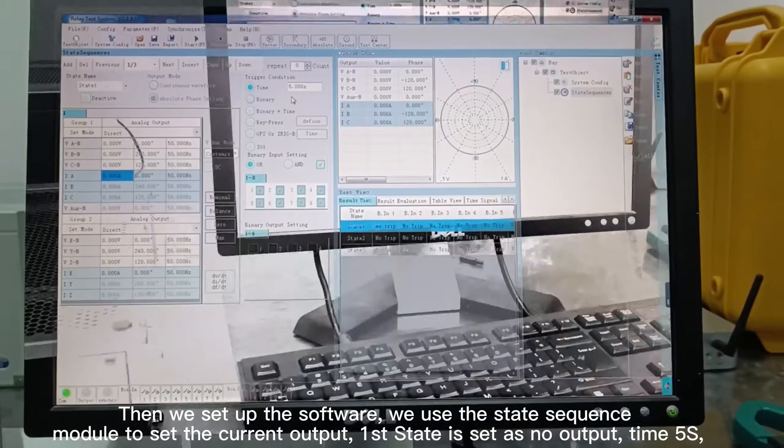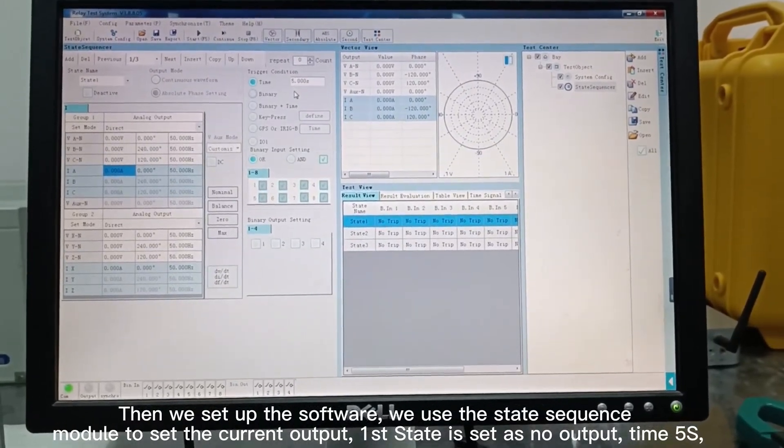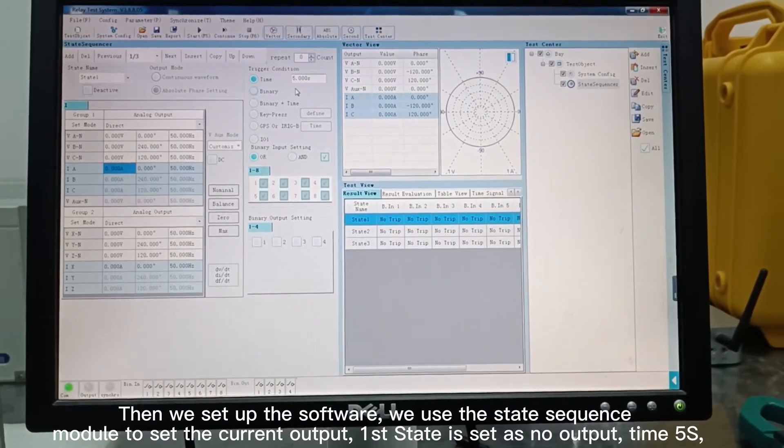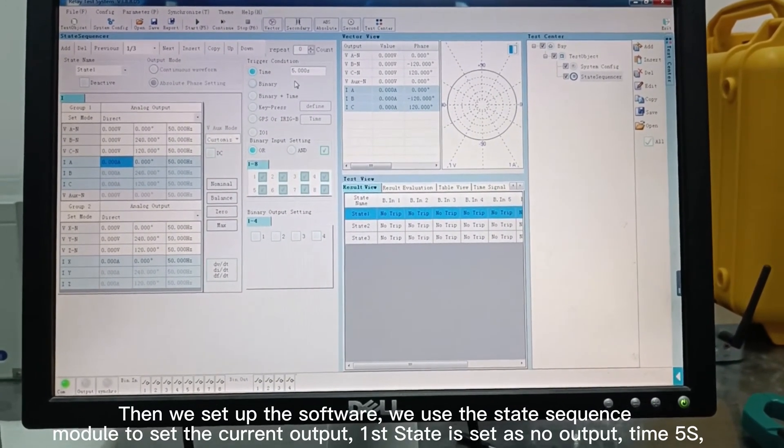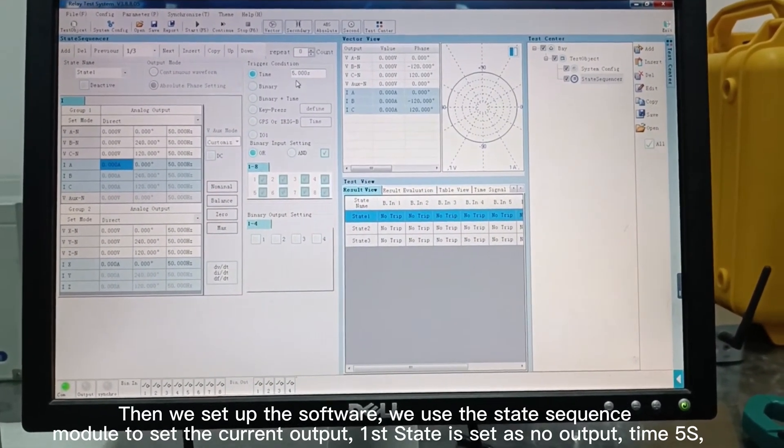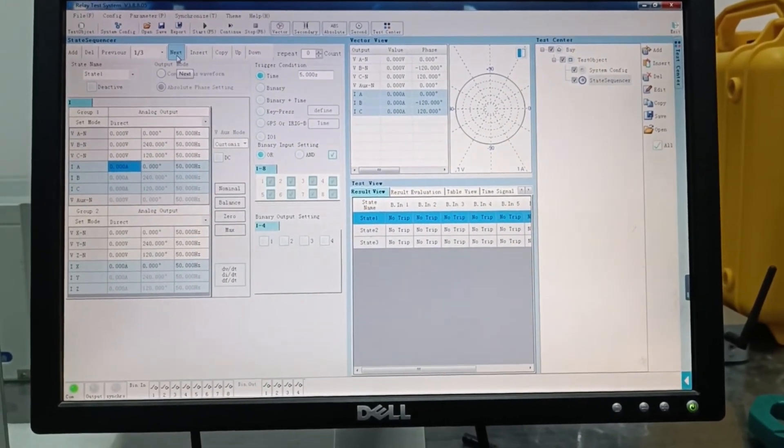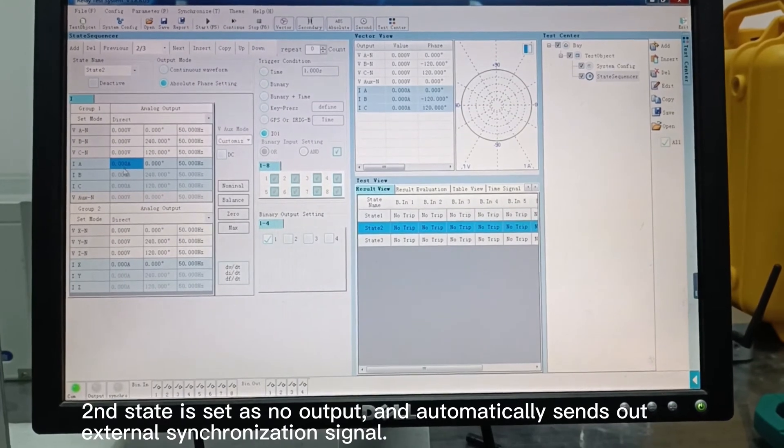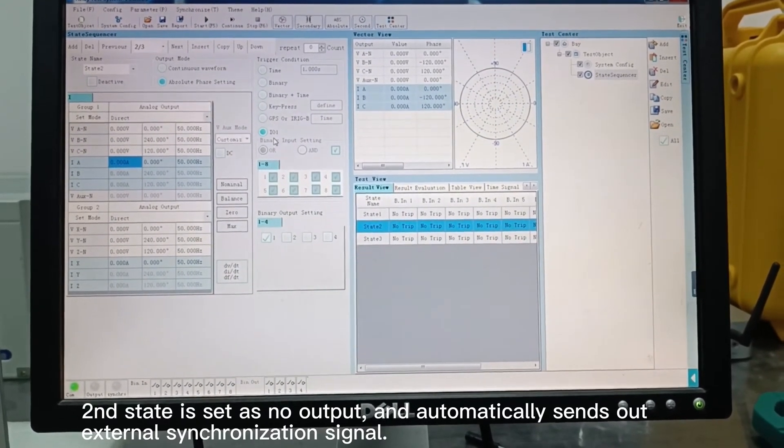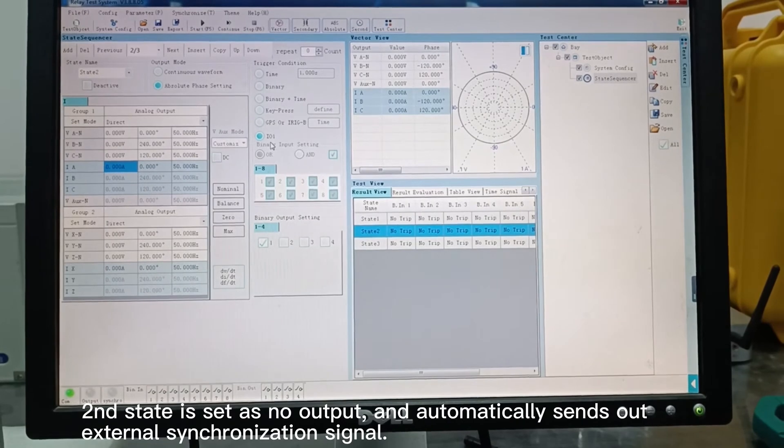To set up the software, we use the state sequence module to get the current output. First state is set as no output, time 5 seconds. Second state is set as no output and automatically sends out external synchronization signals.